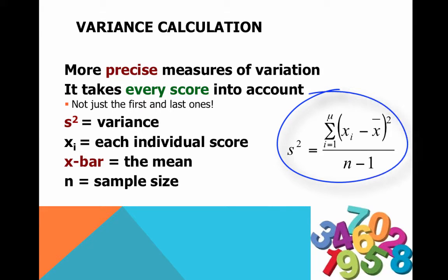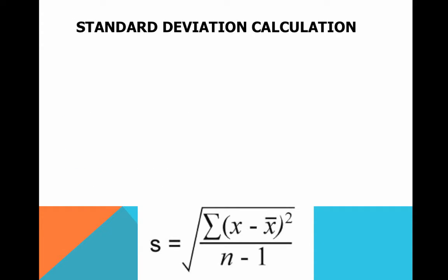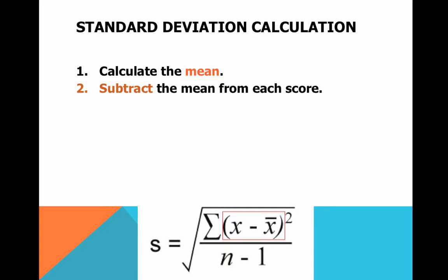Here's the equation — don't freak out. We're going to walk through it nice and slowly so you understand exactly what each of these symbols mean. The steps for calculating the sample standard deviation: Step one, calculate the mean. This X with a bar on top, also known as X-bar, is another way we notate the mean. Once you've calculated the mean, the next step is to subtract the mean from each score. So if we have five different scores, you take the mean and subtract it from each of those five scores.